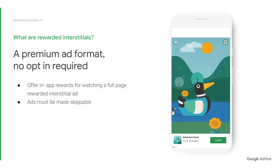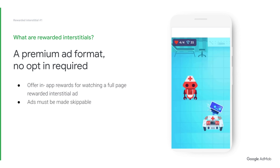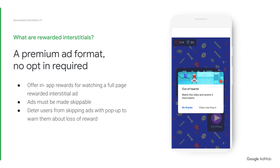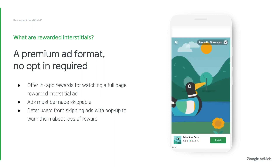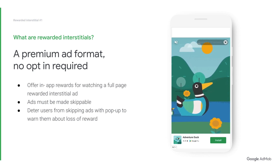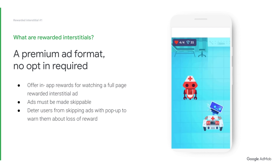With rewarded interstitials, the ads must be made skippable. However, there are ways in which you can encourage users to watch the full ad. For example, if users click to exit, a pop-up could appear to warn them of a loss of reward. Once a user watches the full ad, AdMob sends a video complete callback to grant the reward to the user.